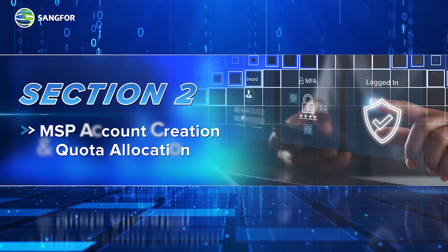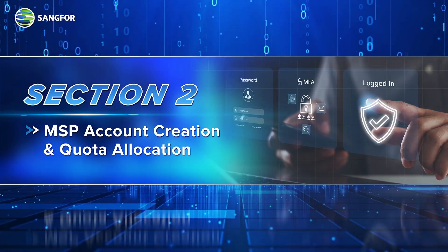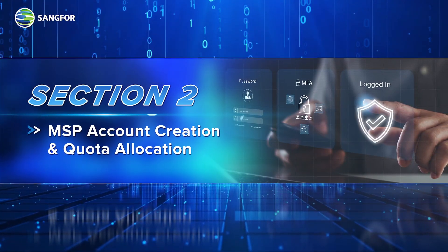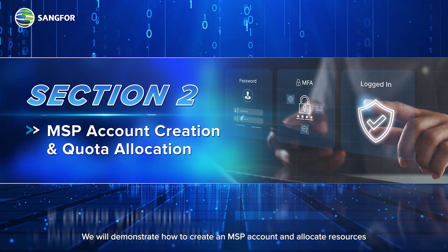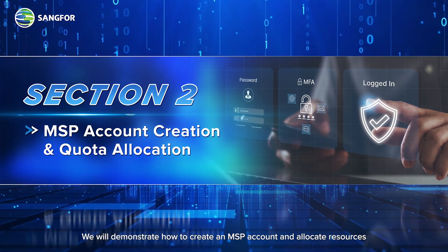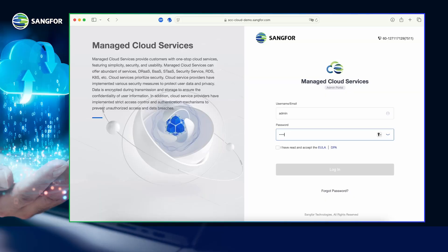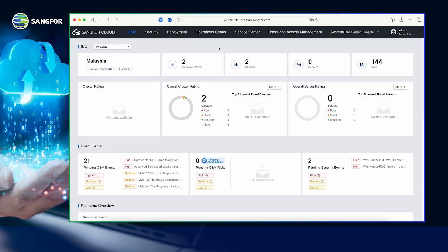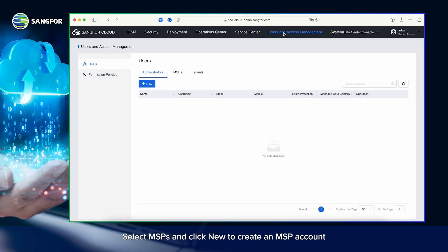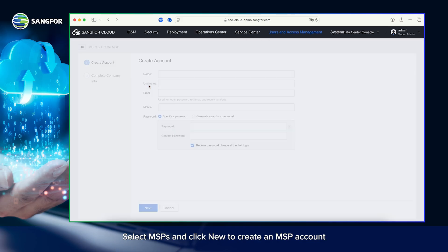Section 2: MSP account creation and quota allocation. In this section, we will demonstrate how to create an MSP account and allocate resources. First, log into the admin portal using Super Admin credentials. This is the Super Admin dashboard. Navigate to Users and Access Management, select MSPs, and click New to create an MSP account.